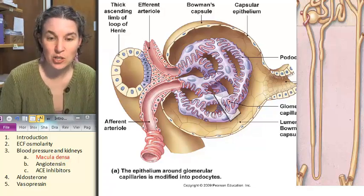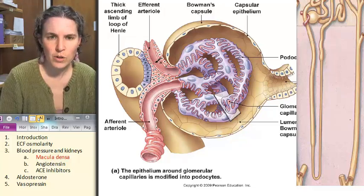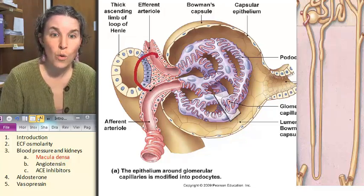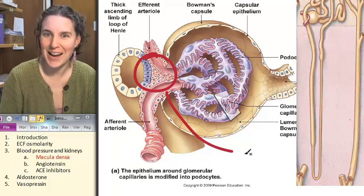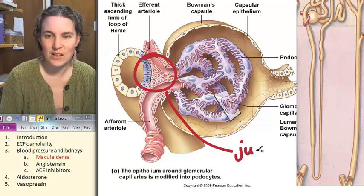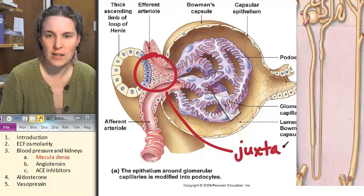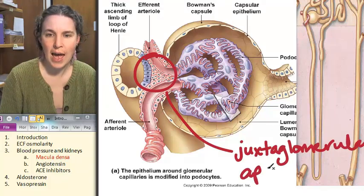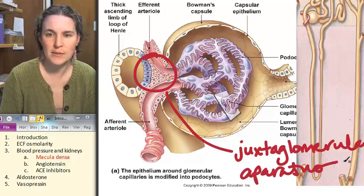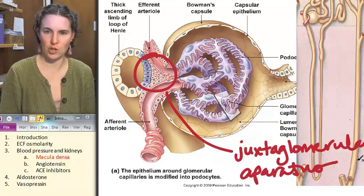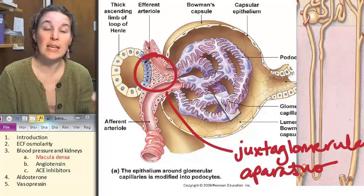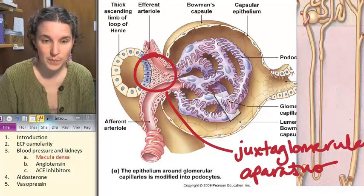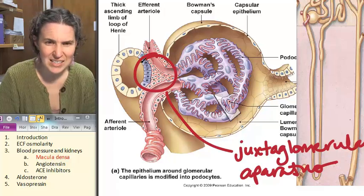And you can see this specialized actual contact between the ascending loop of Henle and my blood supply. And this location has a special name. The whole thing is called the juxtaglomerular apparatus.